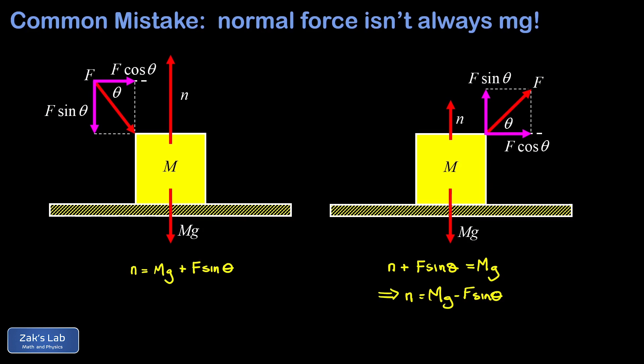Note that if F sine theta is actually bigger than mg, that changes the physics entirely because the net force is upward and the block will fly off the floor. Our little equation for normal force would give us a negative answer, but that's impossible because the floor can't pull the block down.